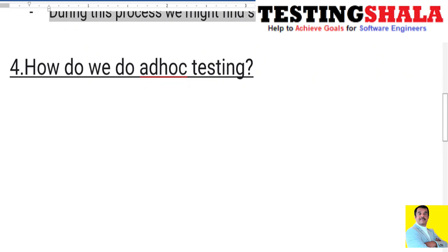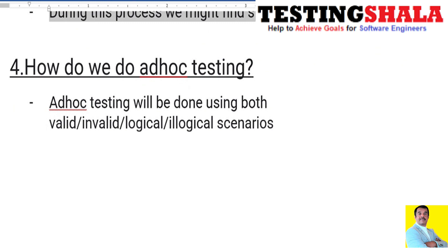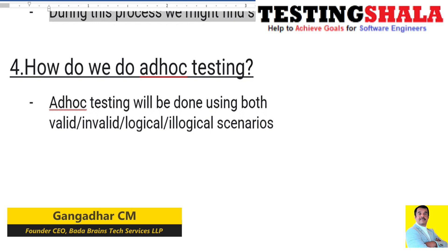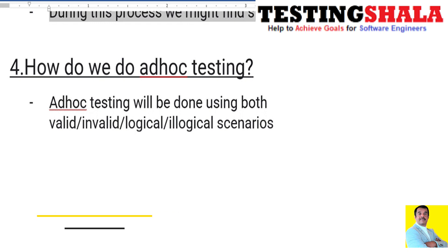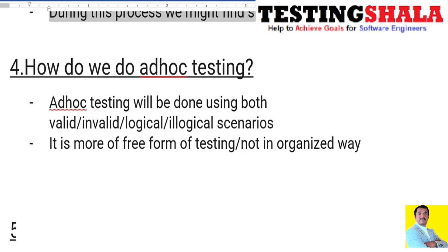The fourth interview question is: how do we do ad hoc testing? Ad hoc testing is done by considering all valid, invalid, logical, and illogical scenarios. The main goal is to break the application on whatever scenario we execute — it doesn't matter; we try to break it without following any rules or regulations and see whether the application still works. Complete freedom is provided to developers and testers to execute any part of the application to find more issues.